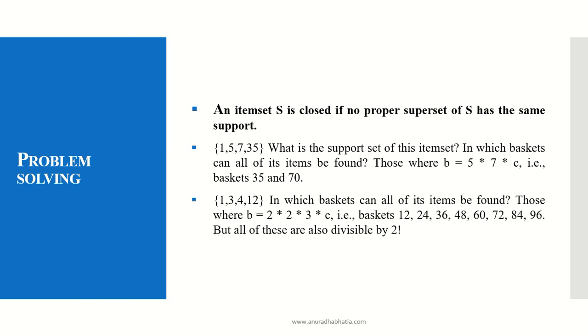The second example is the numbers {1,3,4,12}. In which basket can all these items be found? Those where B is 2×2×3×C where C is any natural number. These baskets will be 12, 24, 36, 48, 60, 72, 84, 96. But all of these are also divisible by 2, so this is where I will get 100% confidence.